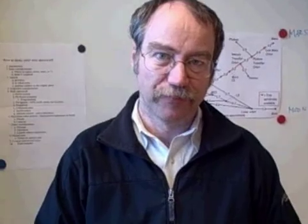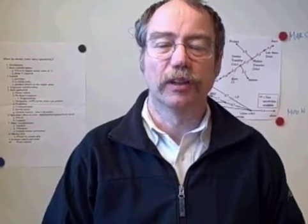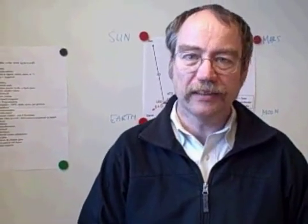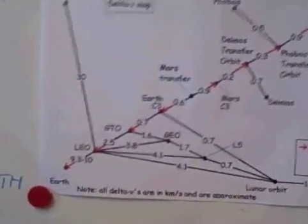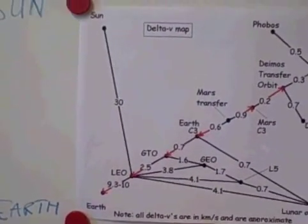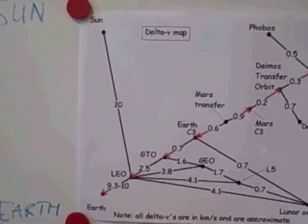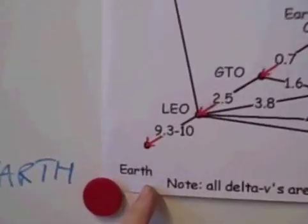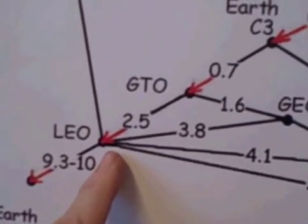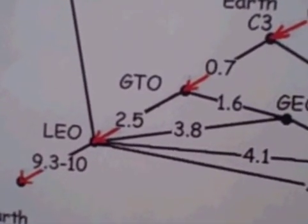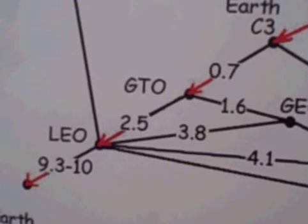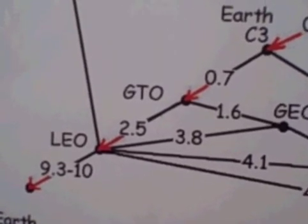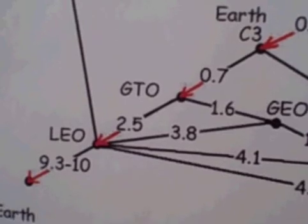For where you want to go, let's start with space. If you just want to go to space, let's look at this diagram which I found on the net — I will put the reference into the blog as well. Basically, if you come from Earth and move up to low Earth orbit, it requires between 9 and 10 kilometers per second as your speed change.